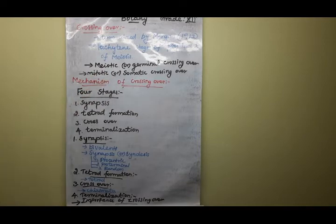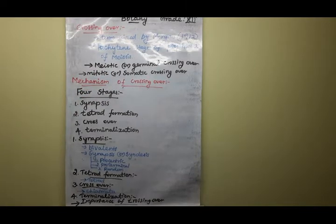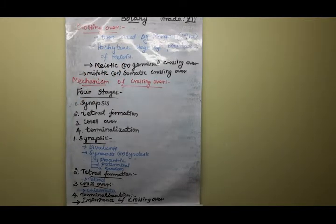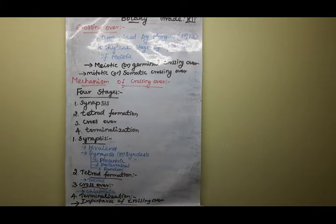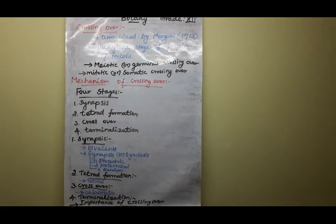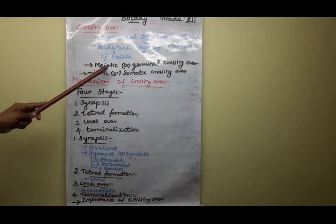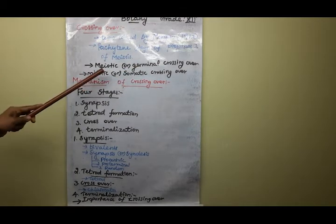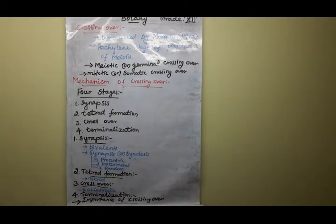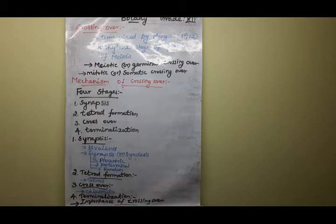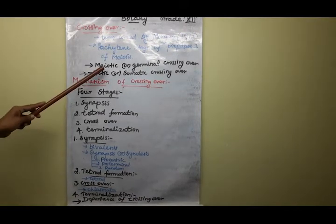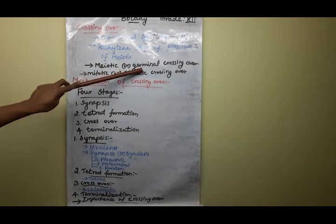First: meiotic or germinal crossing over. This crossing over occurs in the germinal cells during gametogenesis. That is called germinal crossing over. Usually, this type of crossing over is the most common. But in rare conditions, mitotic or somatic crossing over is present.